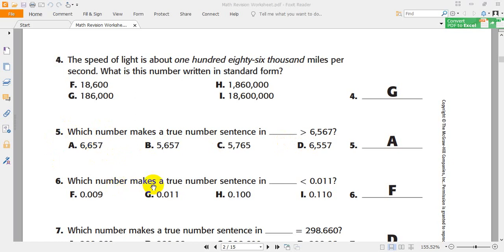Which number makes a true number sentence? We need to choose one of them which is less than 0.011. Which number is less than this number? Let's see. As you see here, 0.011. They are the same.